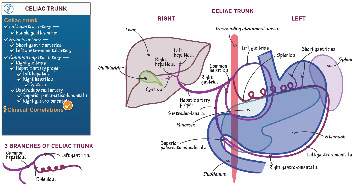In our table, denote the following clinical correlation. In celiac artery compression syndrome, also known as Dunbar syndrome, compression of the celiac trunk — usually by the median arcuate ligament of the diaphragm — reduces blood flow and causes abdominal pain after eating.